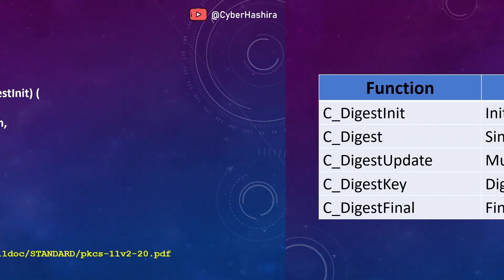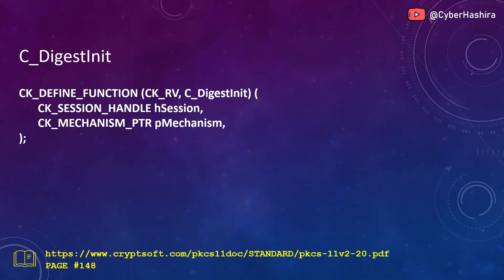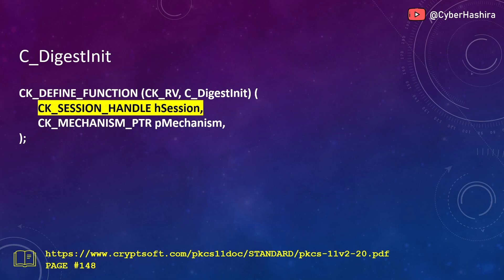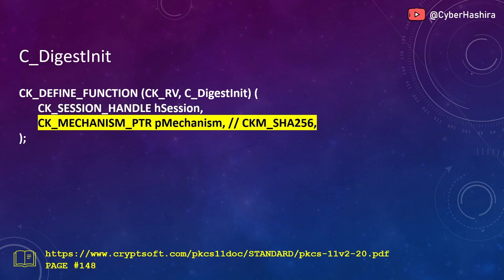I'll start with C_DigestInit. The C_DigestInit function is used to initialize a message digest operation. This is the starting point for any message digest operation. This function takes two arguments. Like many other PKCS11 functions, the first argument is a session handle number — you need to have a session open for this function.